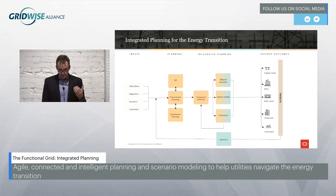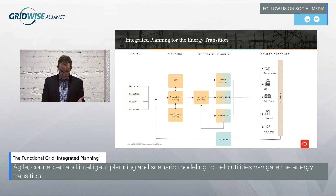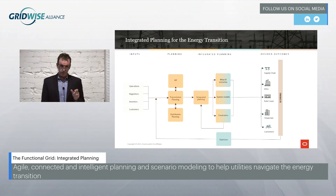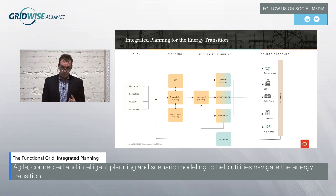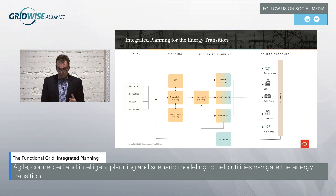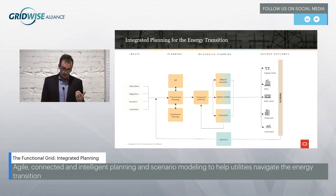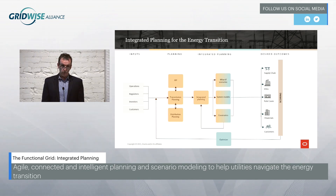With the upcoming federal infrastructure spending wave, and potentially the new bill as well, and momentum continuing after COP26, it's critically important that the financial, social, and political capital being built are spent efficiently, and much more importantly, optimally — to produce the outcomes we all want, which is rapid decarbonization coupled to continued reliable, safe, and affordable power.